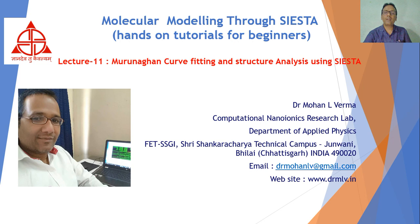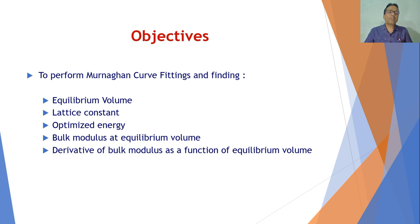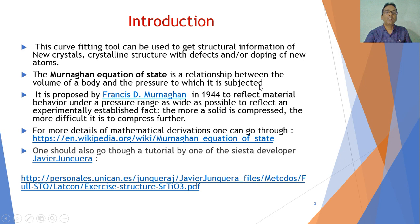The title of this lecture is Murnaghan curve fitting and structure analysis using SIESTA. The objectives of this lecture are to perform Murnaghan curve fitting and find the equilibrium volume, lattice constant, optimization energy, and bulk modulus at equilibrium volume, as well as the derivative of bulk modulus as a function of equilibrium volume. This curve fitting tool can be used to get structural information of new crystals and crystalline structures with defects or doping of new atoms.